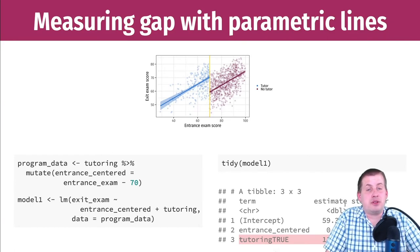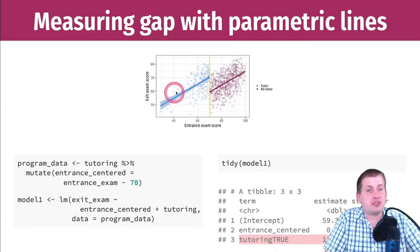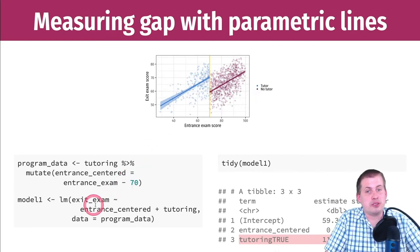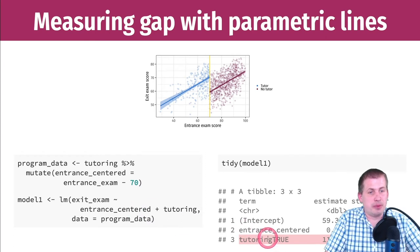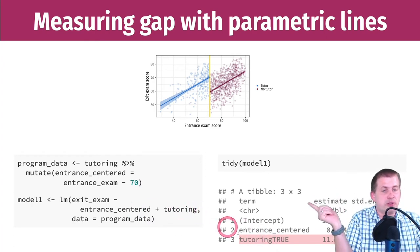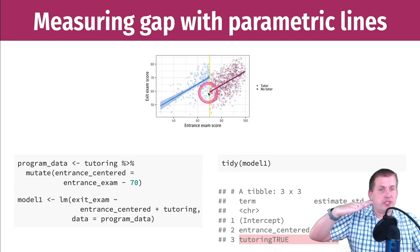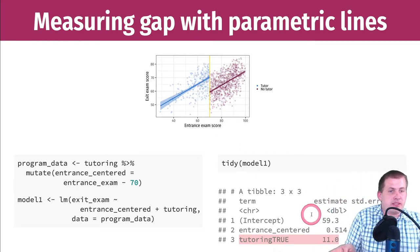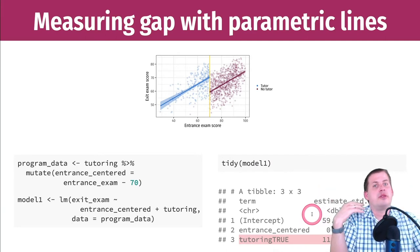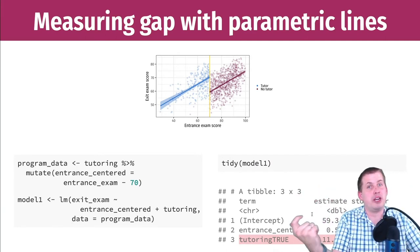If you're using a fancier parametric model with squared or cubed terms to better fit the data, those go into the model as entrance_centered_squared or entrance_centered_cubed. But the main coefficient you care about is still the one for tutoring, because that represents the change in intercept due to being in the program — that's the causal effect across all parametric regression models.